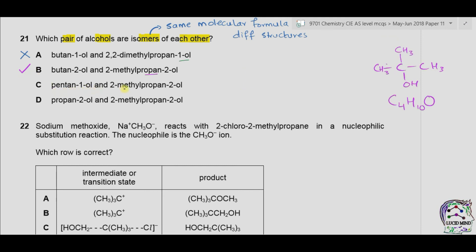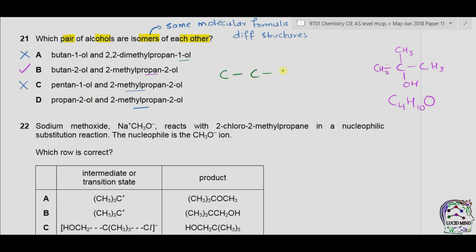For option C we have pentan-1-ol and 2-methylpropan-2-ol. Pentan-1-ol has five carbon atoms in the chain, while 2-methylpropan-1-ol has four carbon atoms — these are not isomers. In option D we have propan-2-ol: three carbon atoms with OH on the second carbon, molecular formula C3H8O. Since the number of carbon and hydrogen atoms differs from the other compound, D is also not an isomer pair. The correct answer is therefore B.